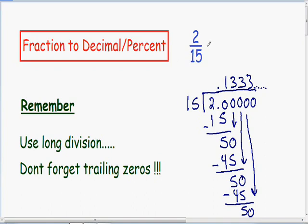So if we divide 2 by 15 we know that the fraction turns into the decimal 0.1333 and the threes go on forever.